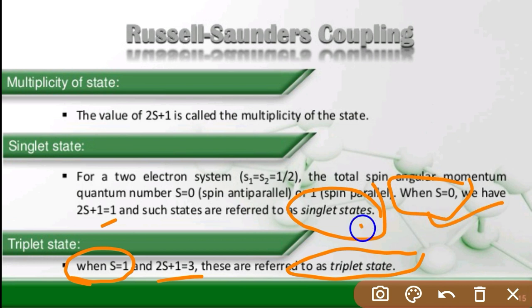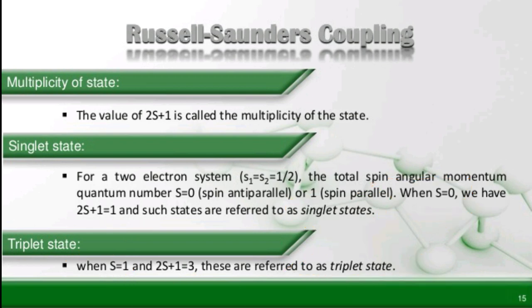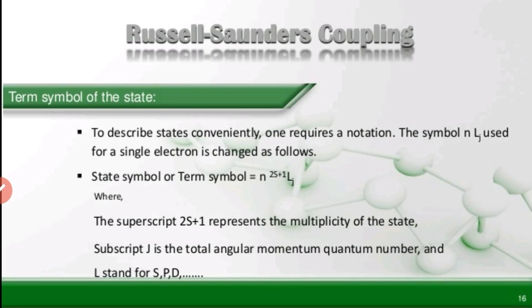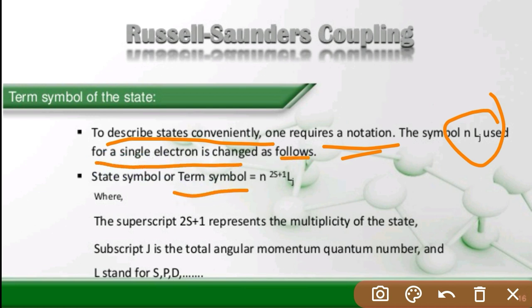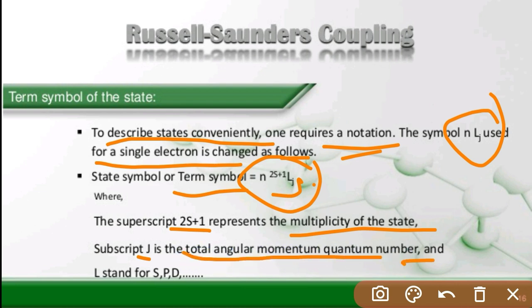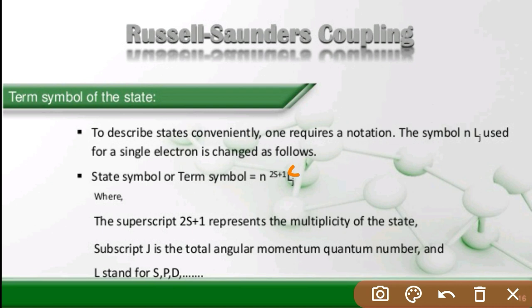When S = 0 we have a singlet state, and when S = 1 we have a triplet state. To describe the state conveniently, a term symbol is used. The term symbol is denoted as N^(2S+1)L_J, where N is the principal quantum number, 2S + 1 represents the multiplicity of the state, J as a subscript is the total angular momentum quantum number, and L stands for the orbital designation S, P, D, etc.